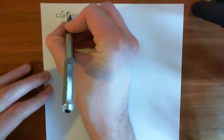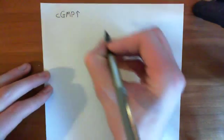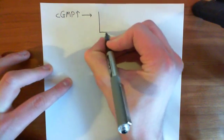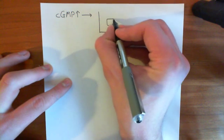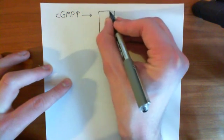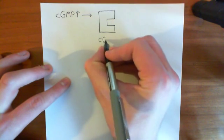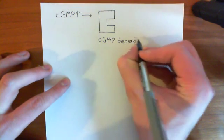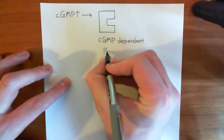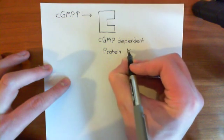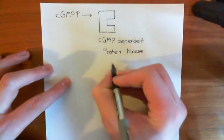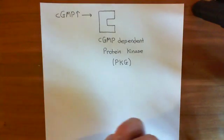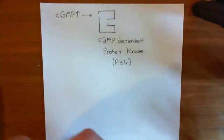So far we've got cyclic GMP going up in the cytoplasm of our cell. Cyclic GMP is going to bind to and activate an enzyme known as cyclic GMP-dependent protein kinase, or a slightly cooler name, protein kinase G — also referred to as PKG. So cyclic GMP binds to and activates this protein kinase G enzyme.